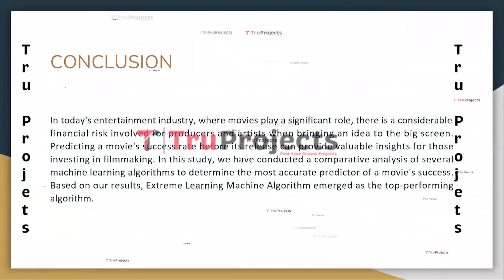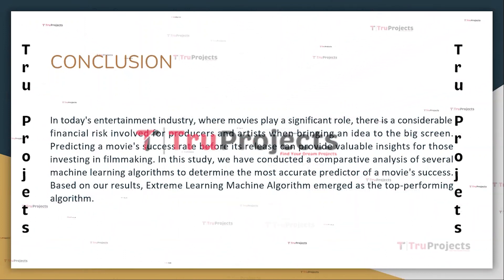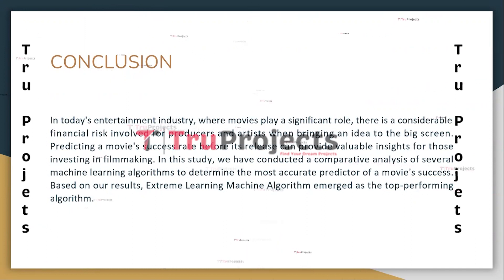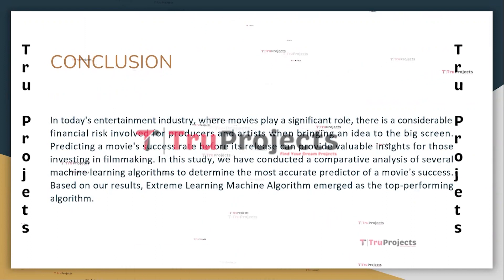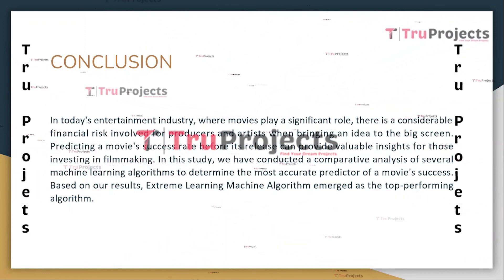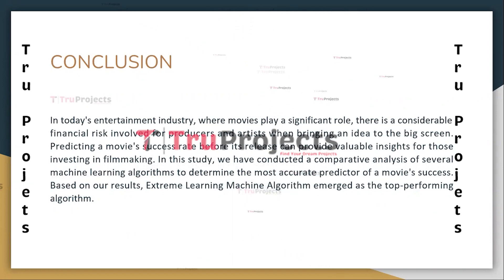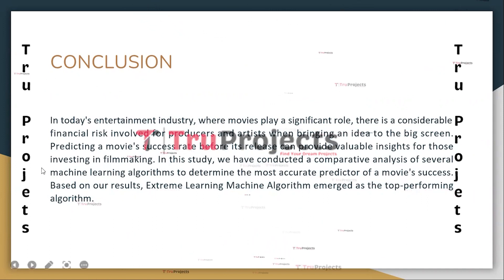In conclusion, in today's entertainment industry where movies play a significant role, there is considerable financial risk for producers and artists when bringing an idea to the big screen. Predicting a movie's success rate before its release can provide valuable insight for those investing in filmmaking. In this study, we conducted a comparative analysis of several machine learning algorithms to determine the most accurate predictor of movie success. Based on our results, the Extreme Learning Machine algorithm emerged as the top-performing algorithm. Thank you for watching.